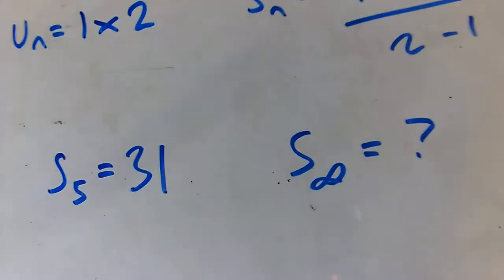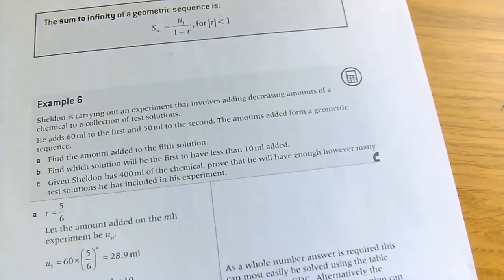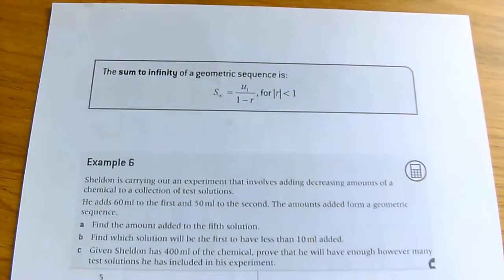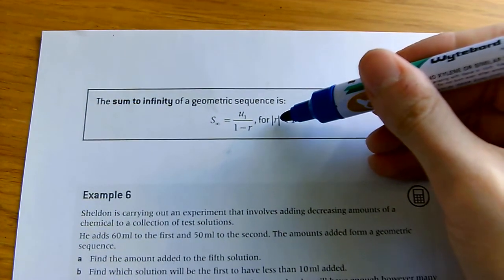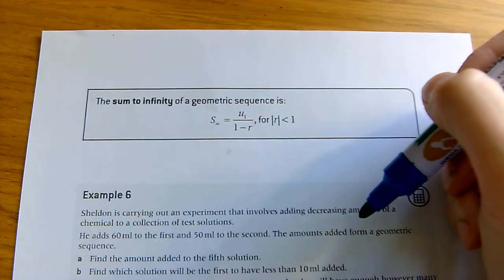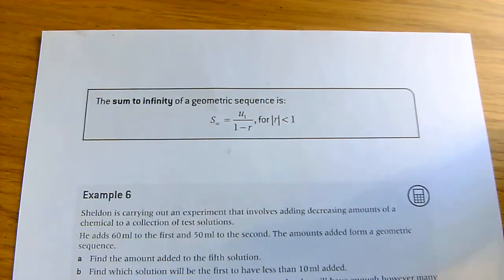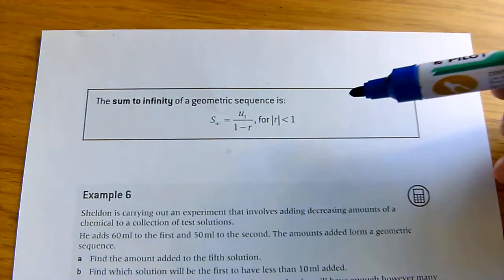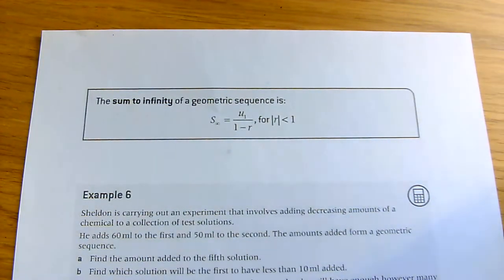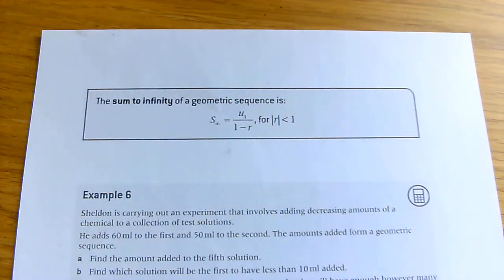The sum-to-infinity formula only works if the magnitude of r is less than 1 — so r can be something like 0.5 or −0.5, but it must be below 1 in magnitude. If r is bigger than 1, you get the situation we just looked at. If r is less than 1, you can actually get a specific finite answer.